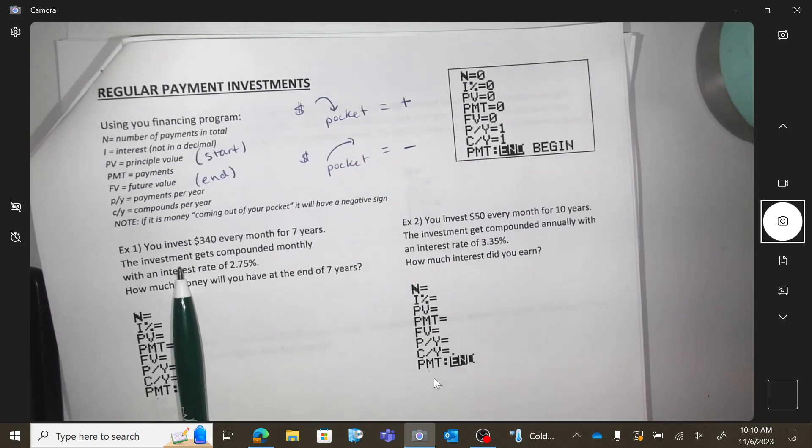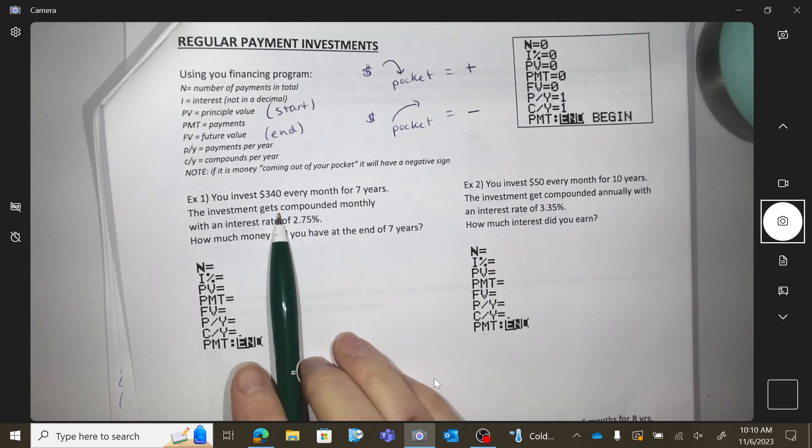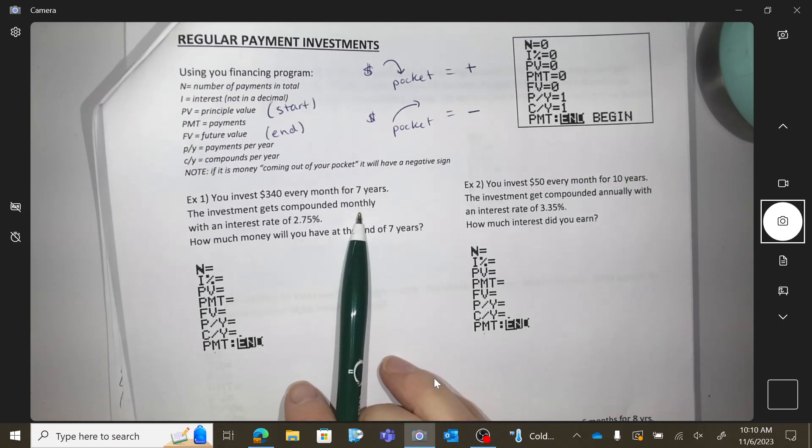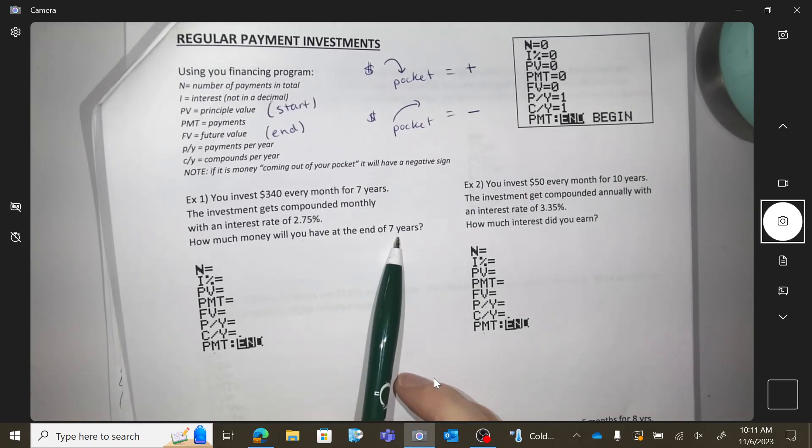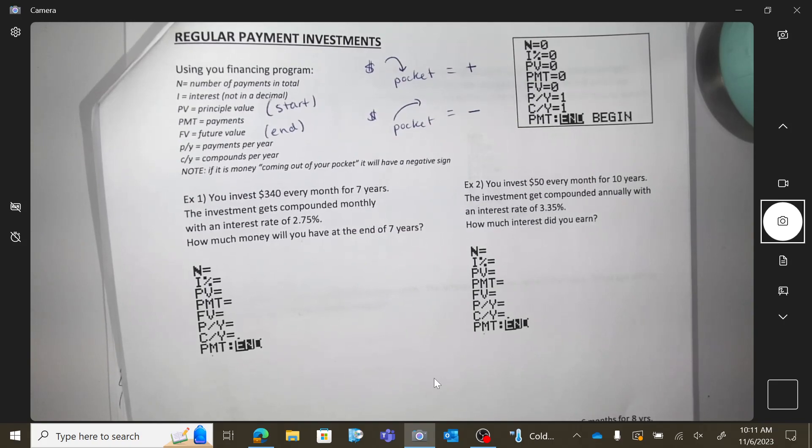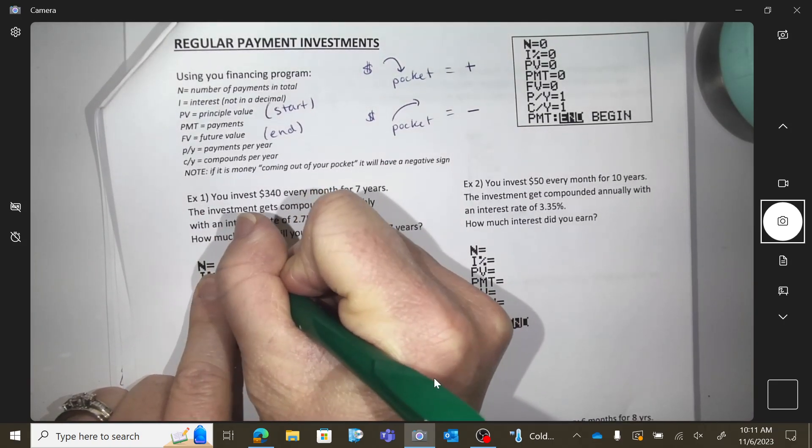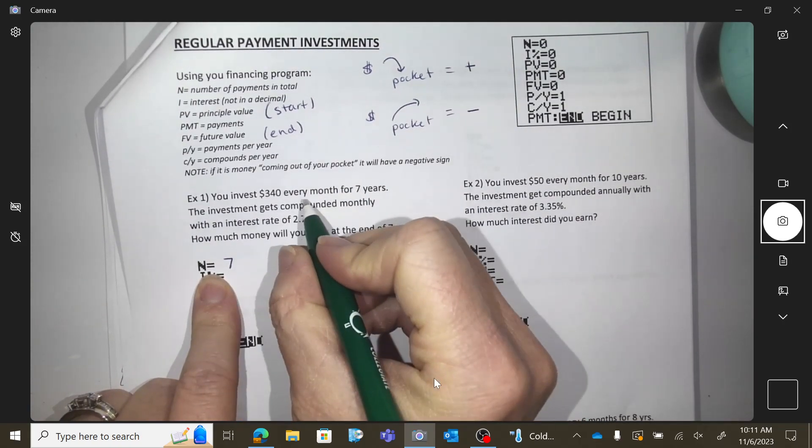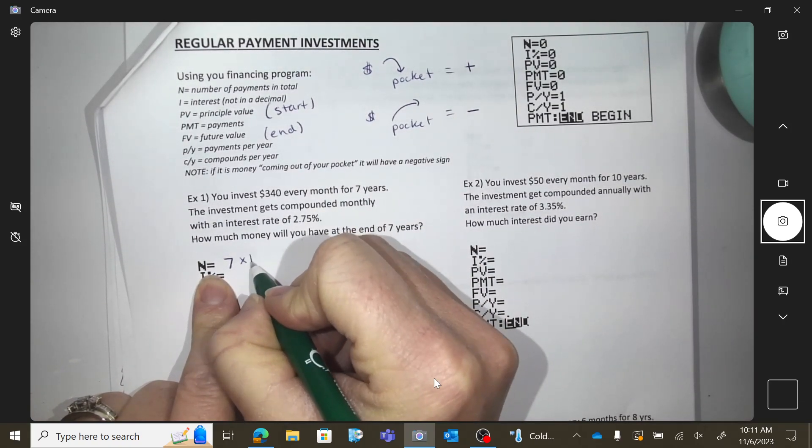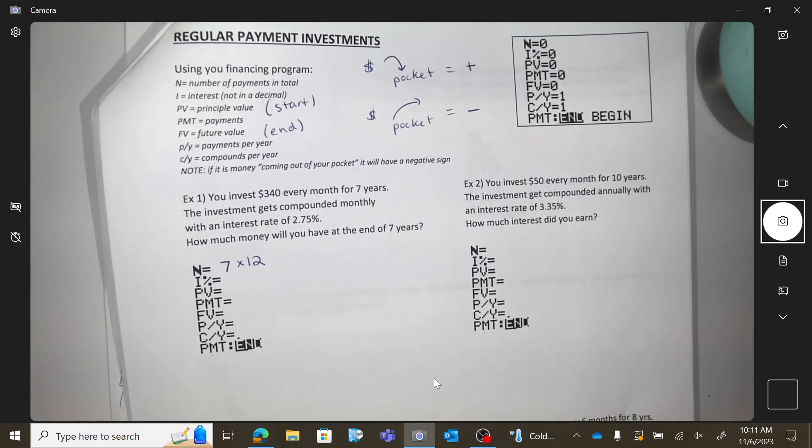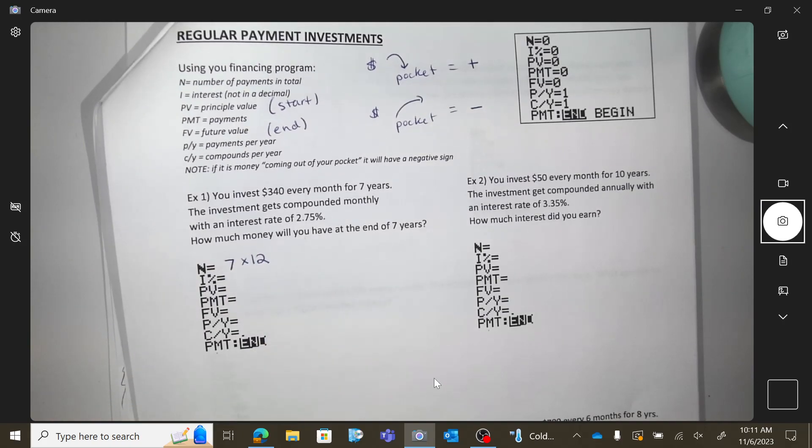Number one, you invest $340 every month for seven years, compounded monthly, interest rate, how much money are you going to have at the end of seven years? N, okay, so we're going to do this for seven years, but we're also going to do it every month for seven years. Does that make sense as an N? Every month for seven years. And your calculator will do this for you, so you can write that in.